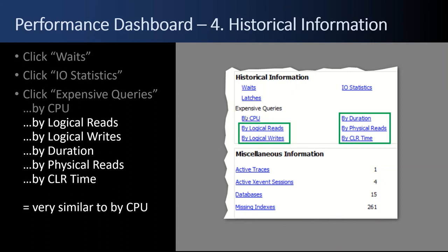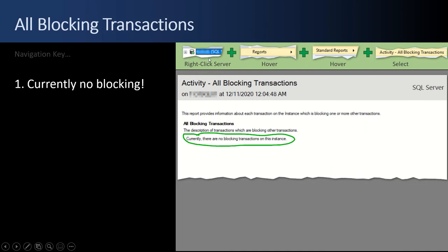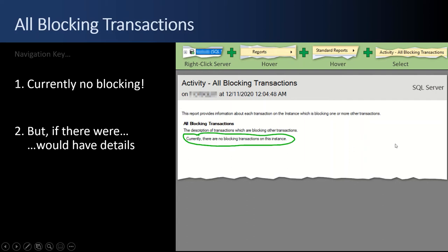Back at the parent Performance Dashboard, there are several other sub-reports I won't go into: logical reads, logical writes, expensive queries by duration, by physical reads, and by CLR. Lots of ways to define an expensive query and view the top 20. Next, the All Blocking Transactions report — navigate to it by right-clicking the server, hovering over Reports, hovering over Standard Reports, and selecting Activity - All Blocking Transactions. In my sample there's no blocking, so it says 'currently there are no blocking transactions on this instance.' If there were, it would show the blocking and waiting transactions, the SQL for each, session IDs, and logins.